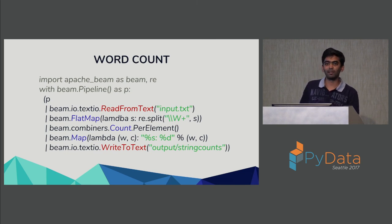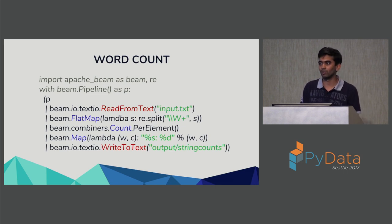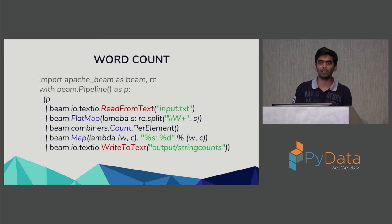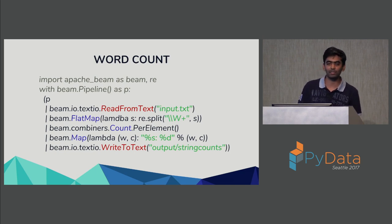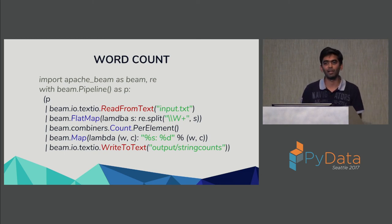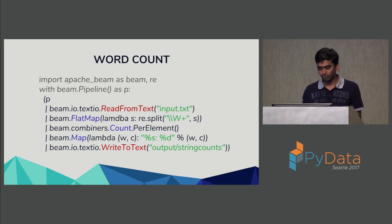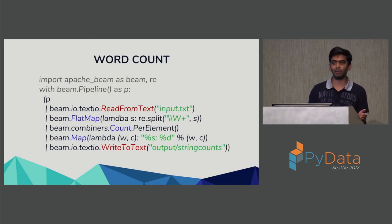Looking at this pipeline, nowhere have we defined what execution framework we're tied to. This pipeline can run on Google Cloud Dataflow, your local machine, Spark, or Flink. Currently Python only supports Direct Runner and Dataflow, but with the Java Beam API you can run the exact same pipeline on Spark, Flink, or Apex. This was a typical batch pipeline, and now we're going to slowly evolve it into a streaming pipeline.